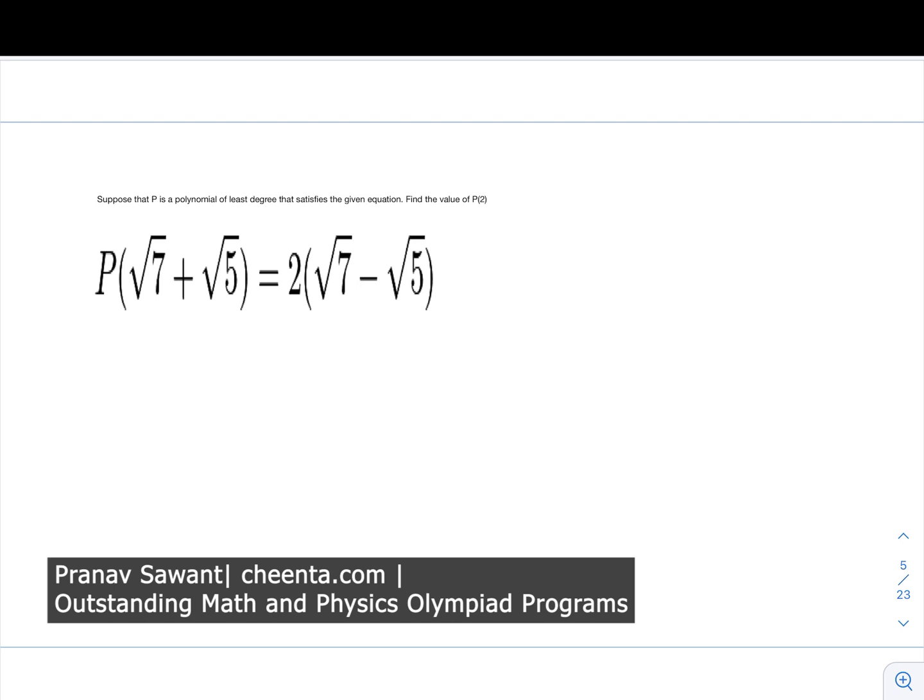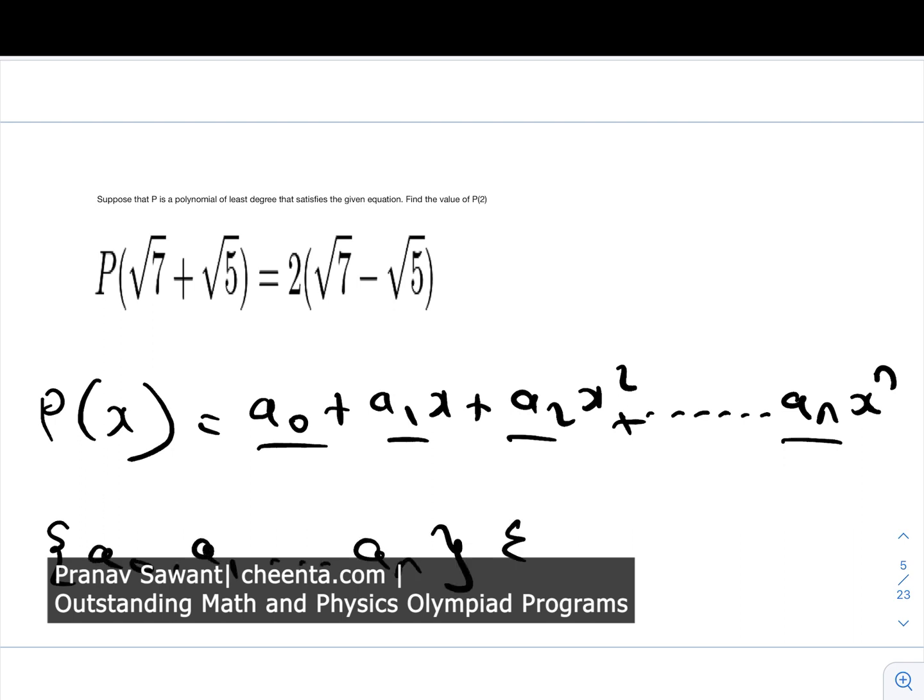What is a polynomial? A polynomial is basically any algebraic expression we represent as p of x. It can be written as a₀ + a₁x + a₂x² + ... + aₙxⁿ. This is a general polynomial of the nth degree, and a₀, a₁, a₂, ... aₙ are the coefficients. For example, a₁ is the coefficient of x, a₂ is the coefficient of x², and so on. These coefficients need to be integers. This is basically what a polynomial is.